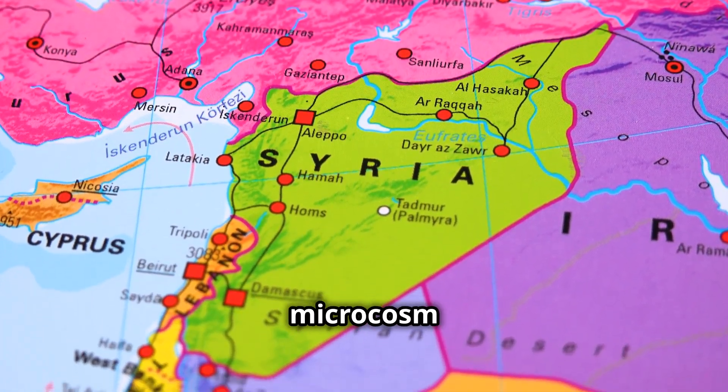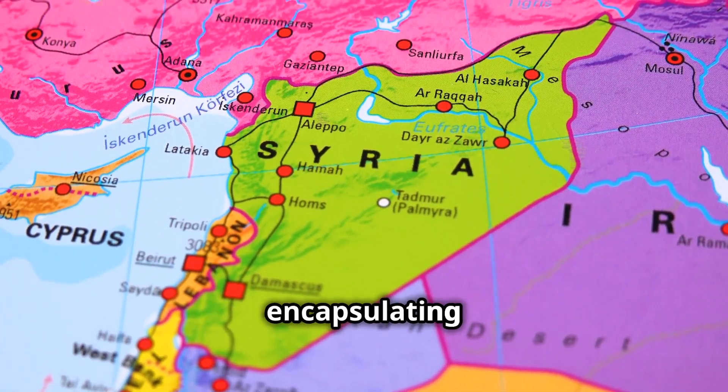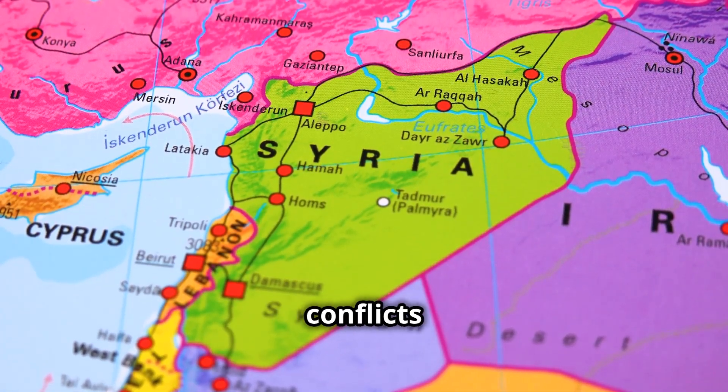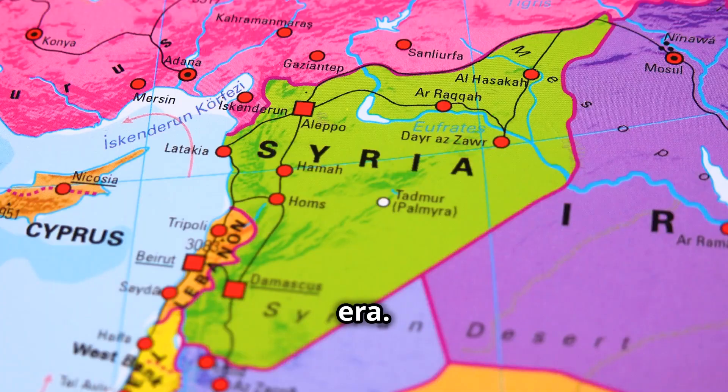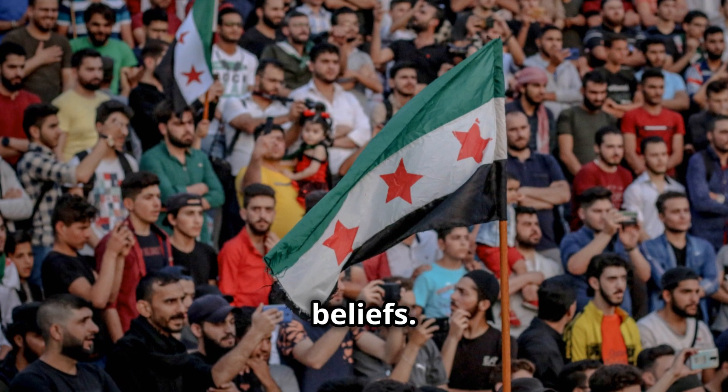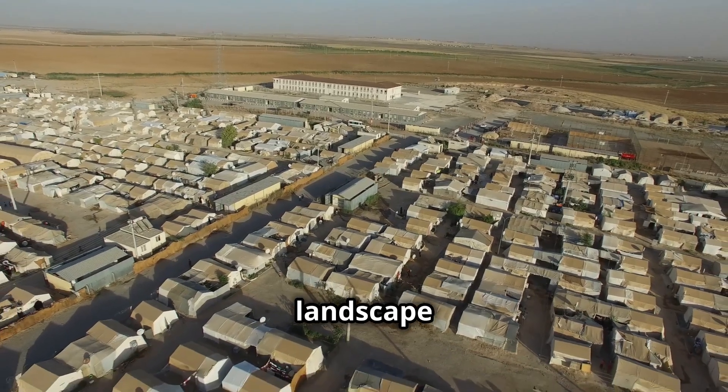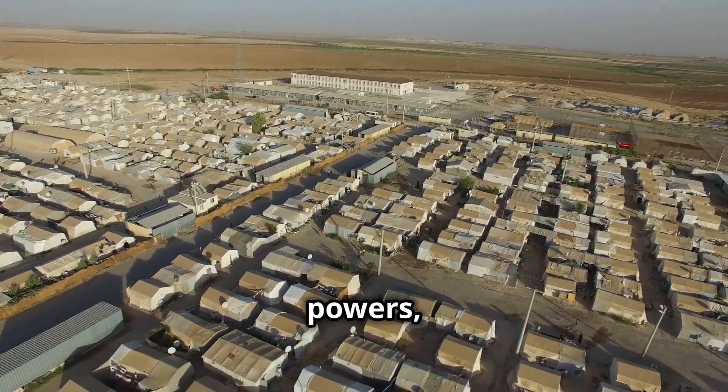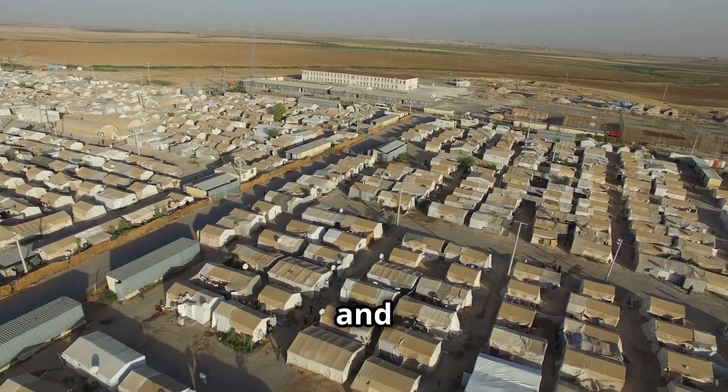Northern Syria stands as a microcosm of the modern world's challenges, encapsulating the complexities and conflicts that define our era. A patchwork of ethnicities and religions, the region is a mosaic of cultures and beliefs. This diverse landscape has become a battleground for competing powers, each vying for influence and control.